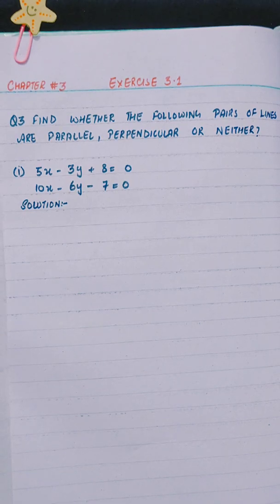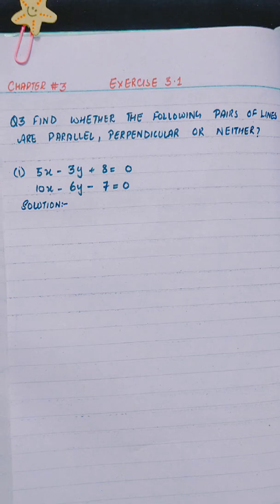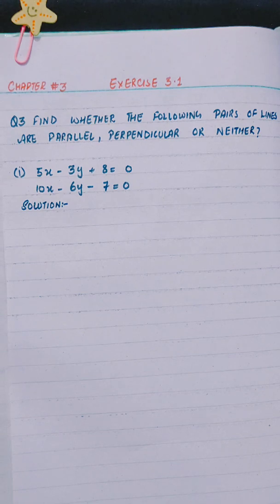Now we will solve question number 3: find whether the following pair of lines are parallel, perpendicular, or neither. Part 1 is 5x minus 3y plus 8 equals to 0, and 10x minus 6y minus 7 equals to 0.